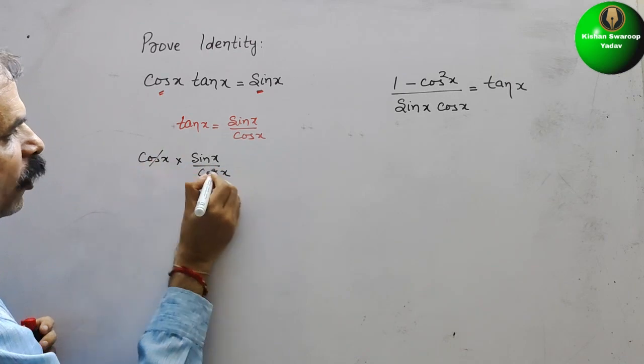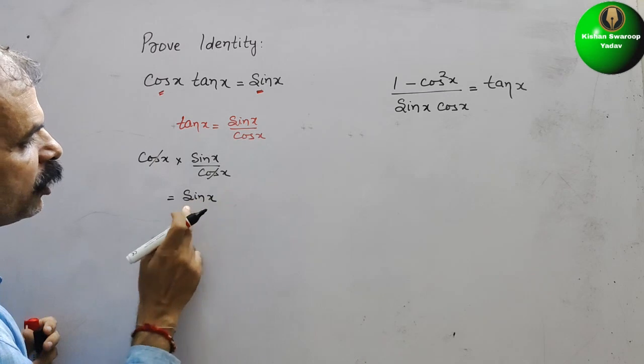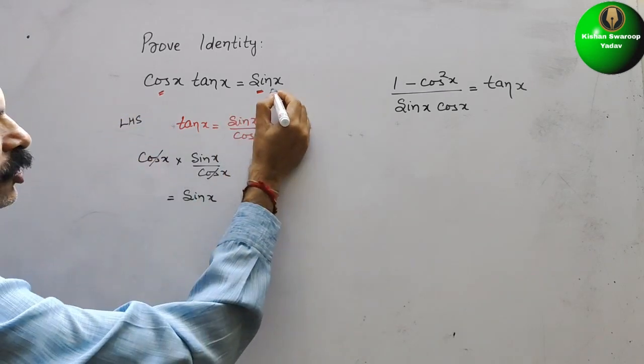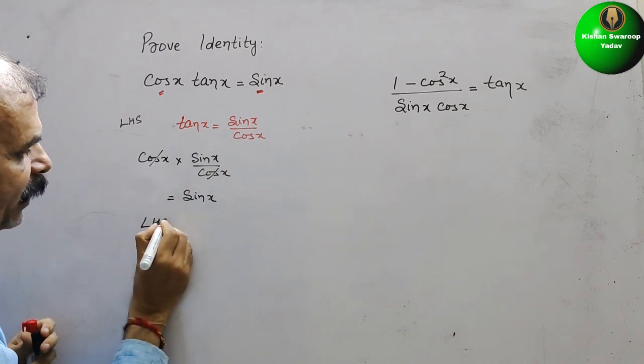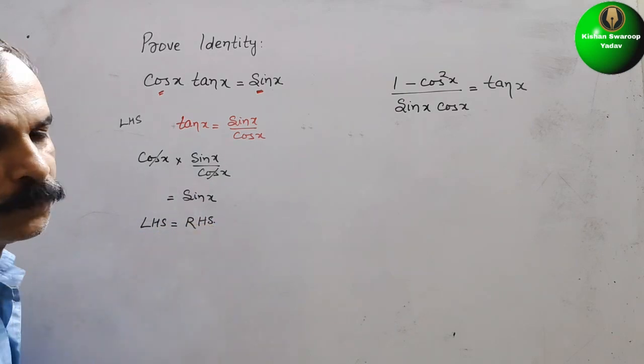So cos x and cos x cancel. Therefore you will get sin x. So this is your LHS and this is your RHS. We can say LHS is equal to RHS. Hence proved.